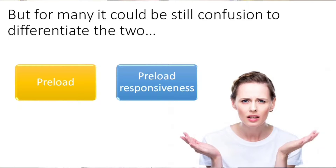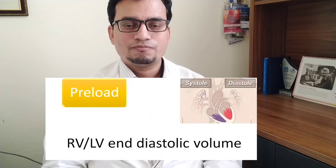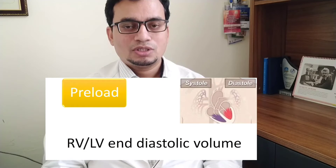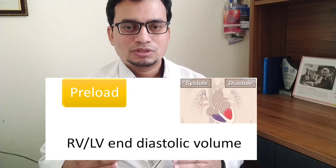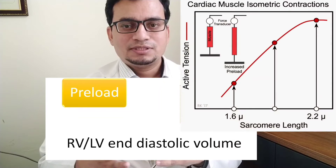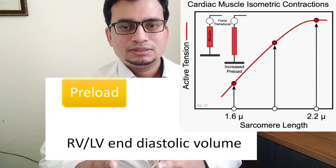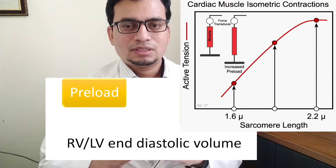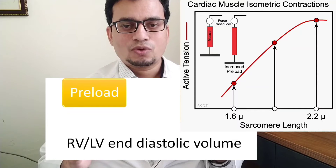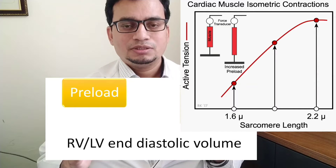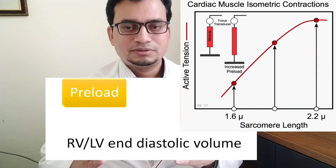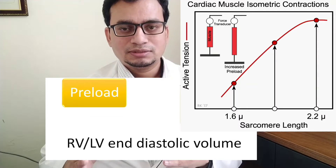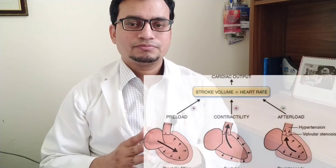Classically, preload has been defined as the maximum degree of myocardial fiber stretch or tension before the start of ventricular contraction, and is determined by the mean sarcomere length at the end of diastole. The ventricular end-diastolic volume is accepted by consensus as the synonym of preload.